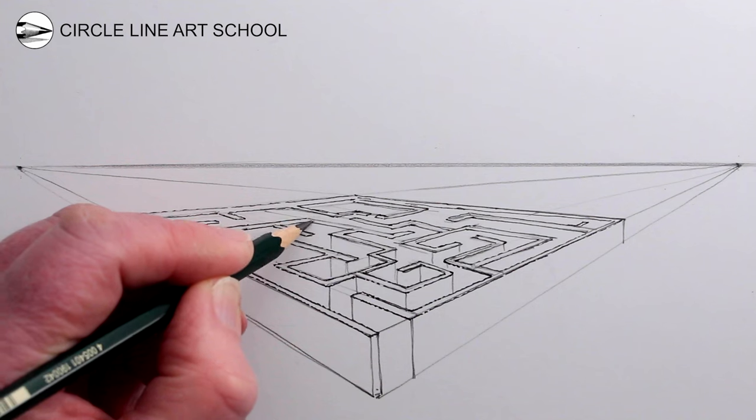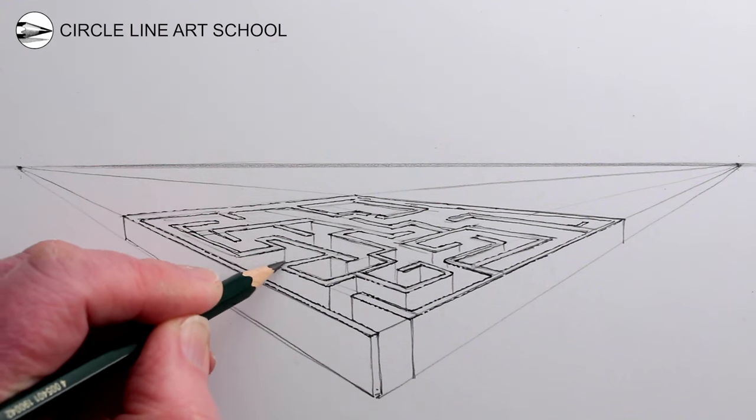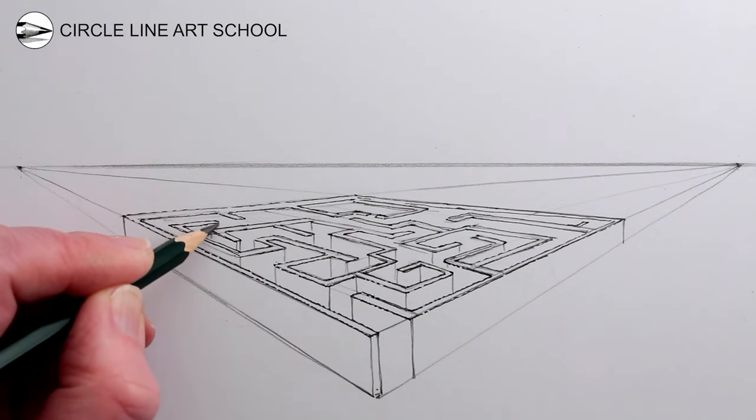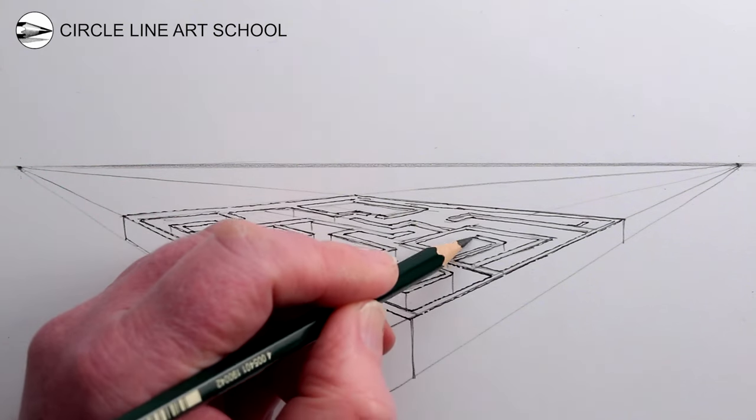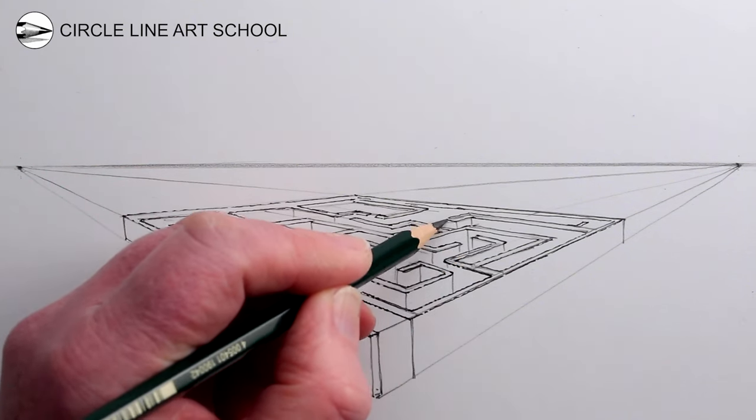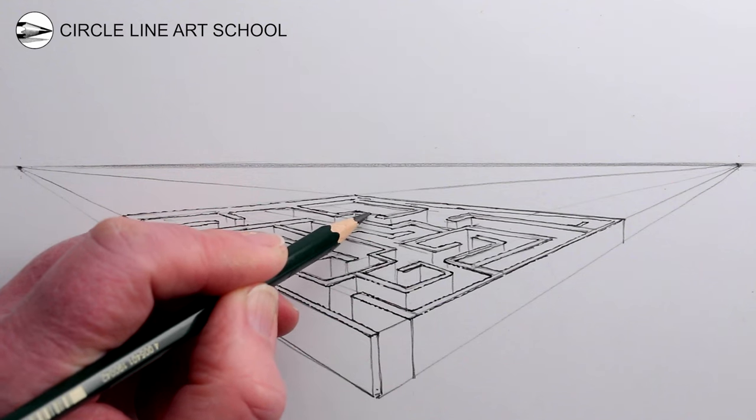So the two-point perspective are the two vanishing points on your horizon line, and then we're increasing the sense of depth by adding these vertical lines from each of the corners of the interior spaces of the maze that you've drawn.